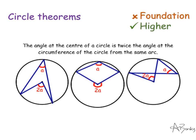The next circle theorem is that the angle at the centre of a circle is twice the angle at the circumference from the same arc. If we start with an arc and draw an angle at the centre, that angle will be twice the size of the angle at the circumference from that very same arc. This is the classic scenario, but it doesn't always look like this — watch out for examples with a major arc, and also cases where the angle at the centre and angle at the circumference are from the same arc.